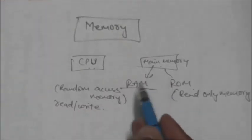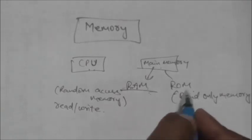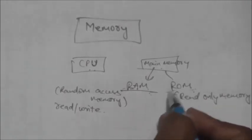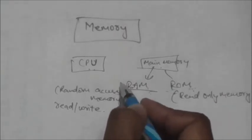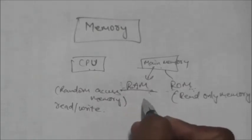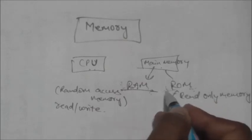The content of RAM can be changed, meaning we can write anything in RAM, but in ROM we cannot write anything. Its content cannot be changed. When power is turned off, the content in RAM is destroyed, but in ROM, when power is turned off, the content is not destroyed.